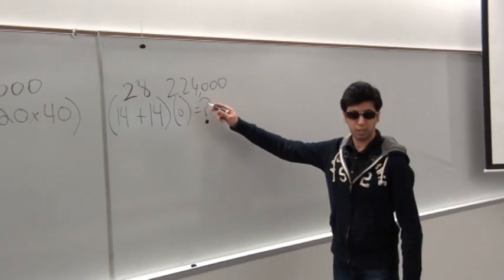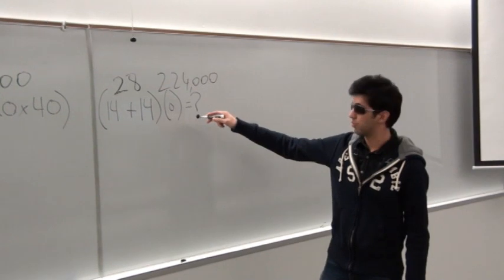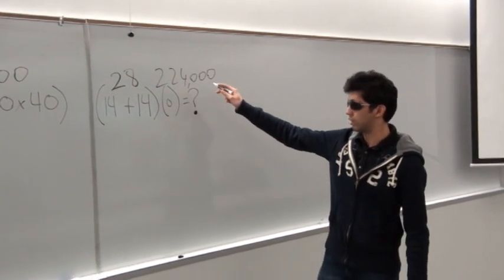Alright, we're down to the last part of the problem. I know you've never gotten this far before, so what is 224,000 times 0?